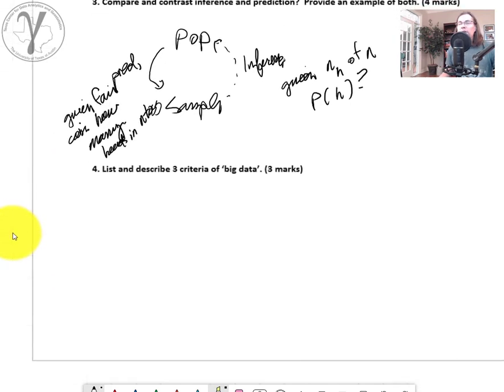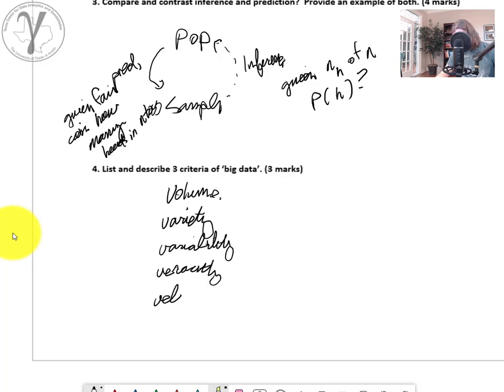Now, describe three criteria of big data. Oh, we love big data. Do I have big data? I think I have big data. And in fact, in many subsurface data sets, we do have big data. So, volume. Let me just write some down. Variety. Variability. Veracity. And velocity. I think those. I hope I got them all. I hope I get 100% on this test.